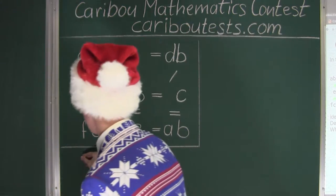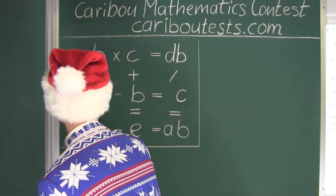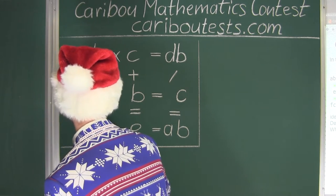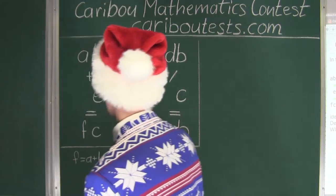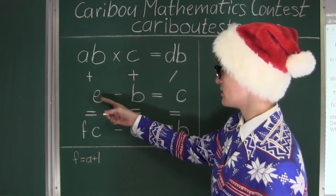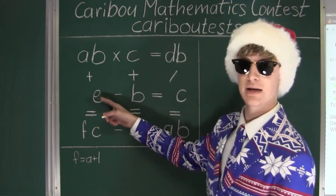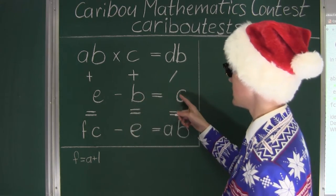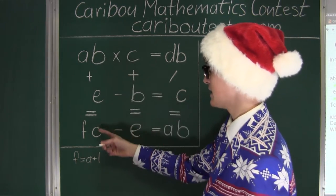So we can write F is equal to A plus one. Now we can eliminate another unknown here for E because it is just B plus C.